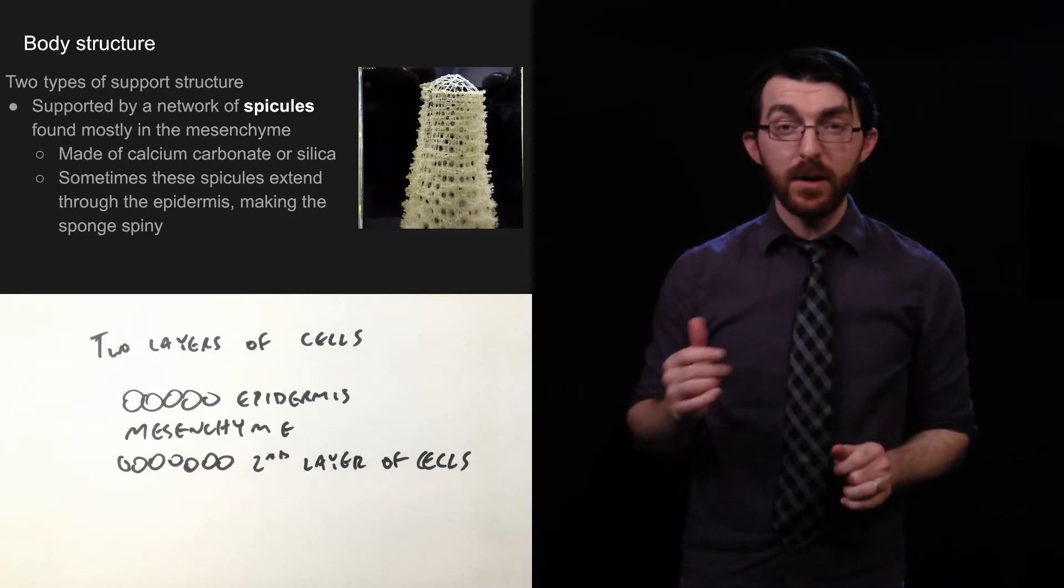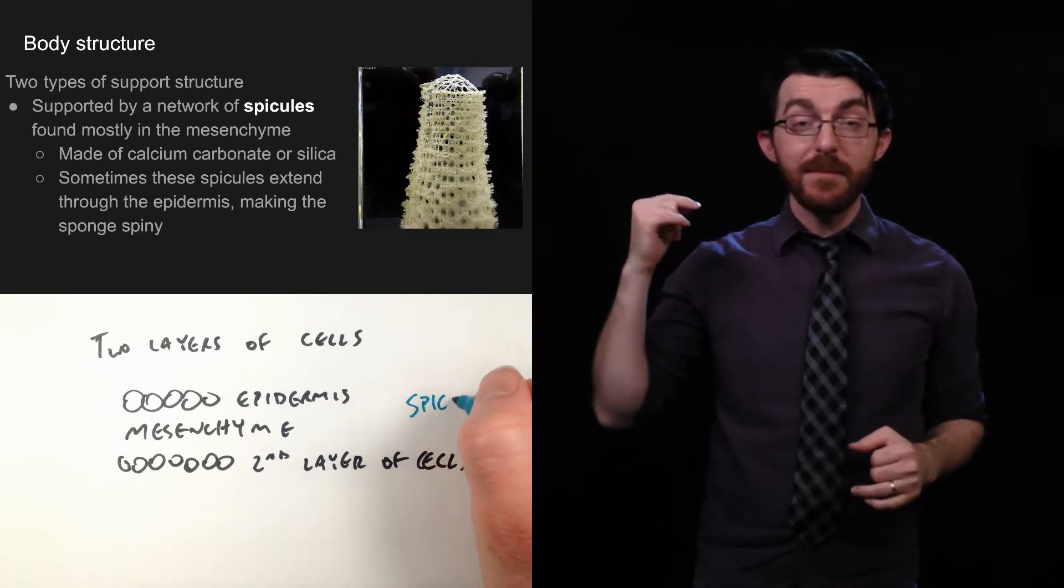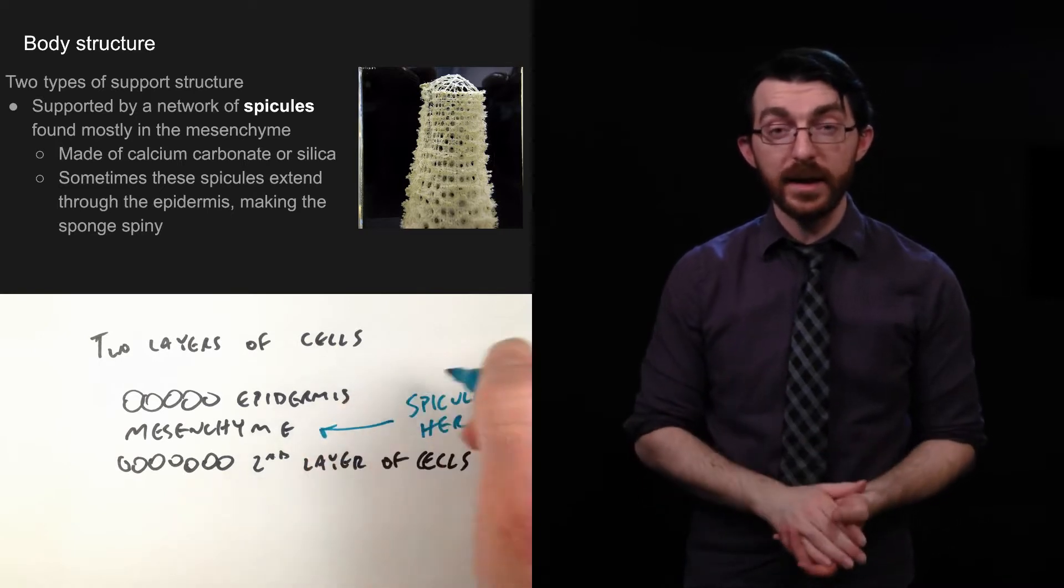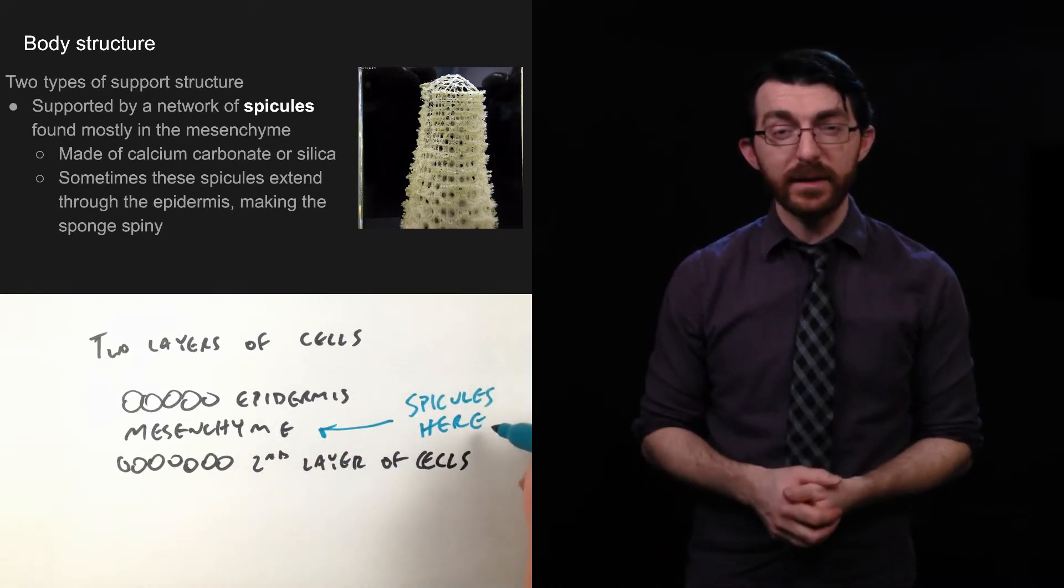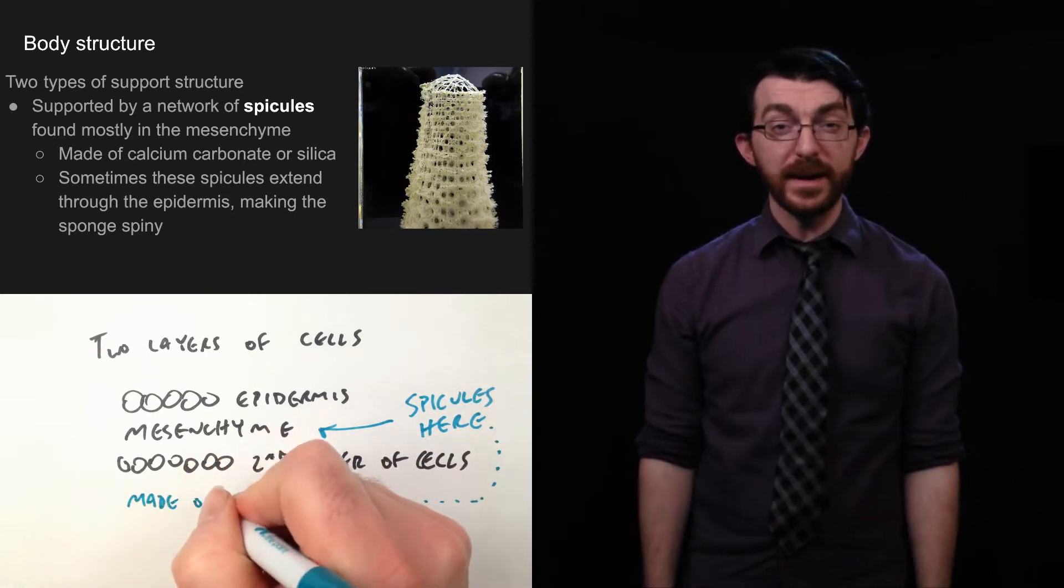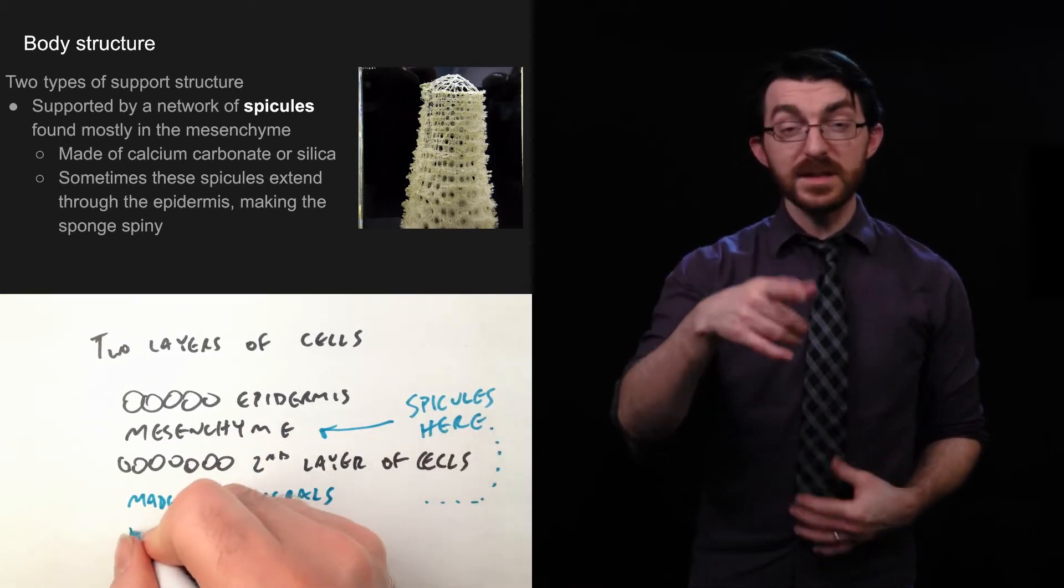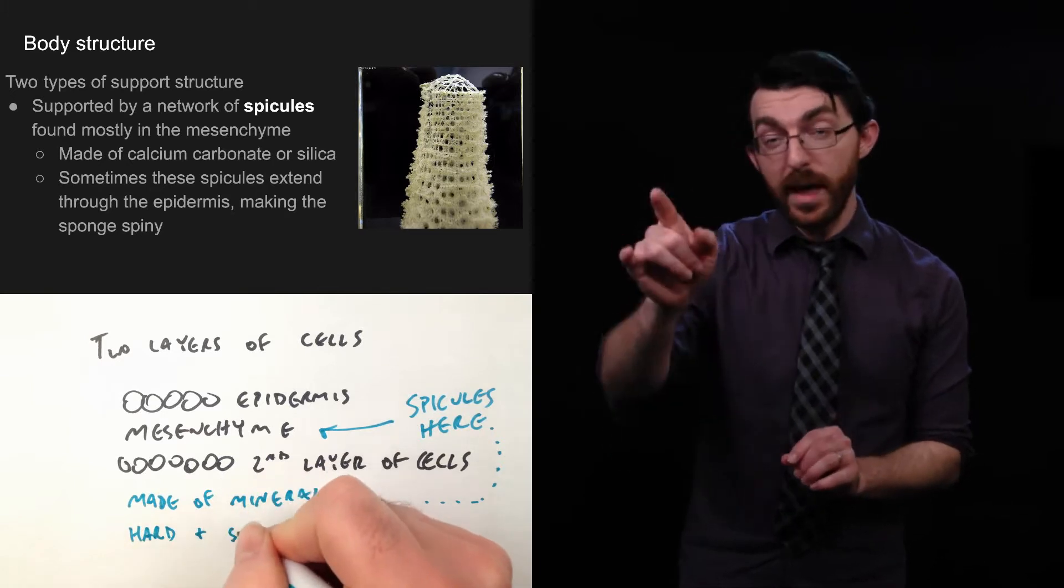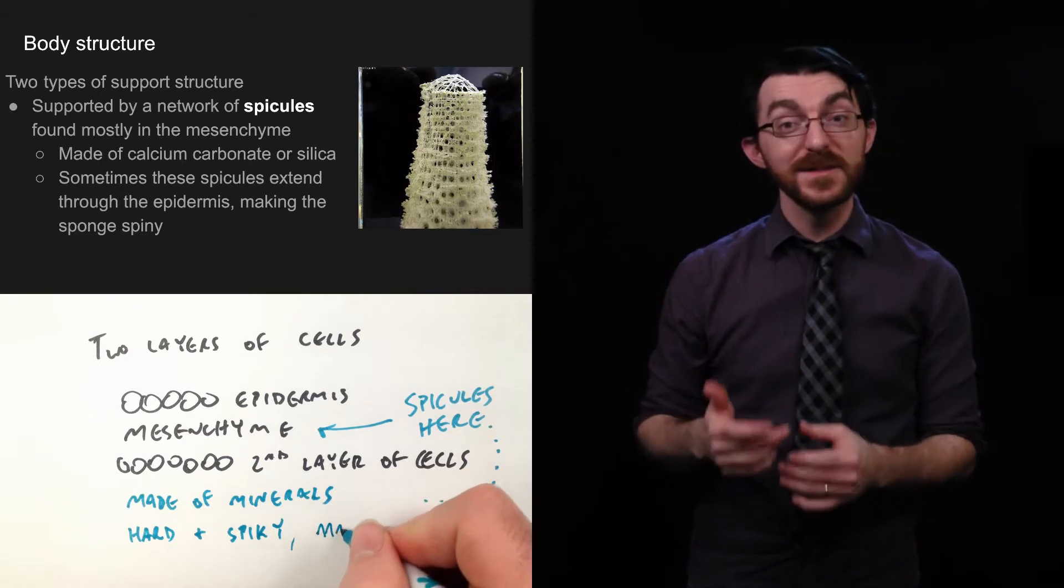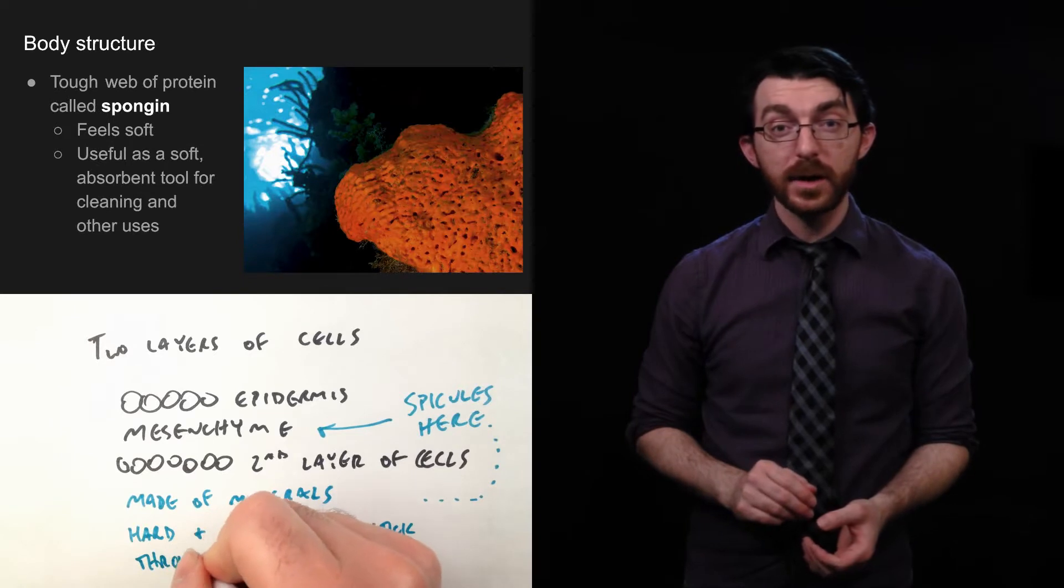Let's move on. So, the structure of its body. It keeps its shape with a network of these hard structures called spicules. They're found mostly in the mesenchyme. And, they are made of calcium carbonate or silica. Those are two minerals. Calcium carbonate is very common in seashells. So, it's widely available in the ocean. And, silica is one of the most common ingredients in dirt. So, it's just plain old minerals from the earth. And, sometimes these spicules that are in the mesenchyme will extend through the epidermis. And, that can actually make the sponge kind of spiny. So, it's going to feel kind of prickly if you try to hold it.